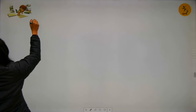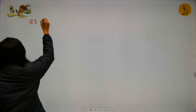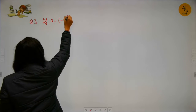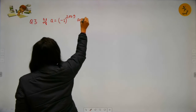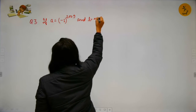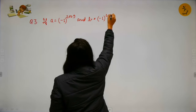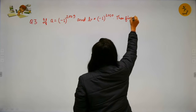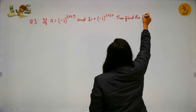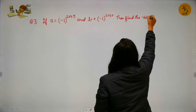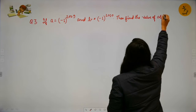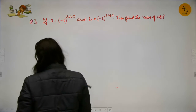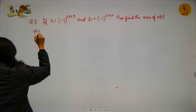Question number 3: If A = (−1)^2009 and B = (−1)^2010, find the value of A·B. The options are: (A) 1, (B) −1, (C) (−1, 2, 0, 0, 9), and (D) (2, 0, 1, 0). We need to find A × B.